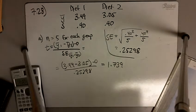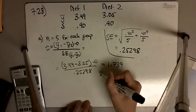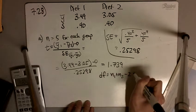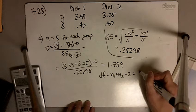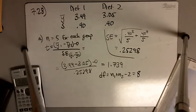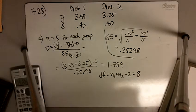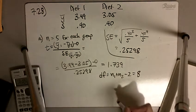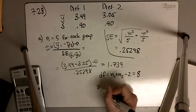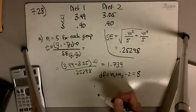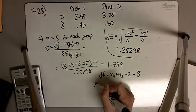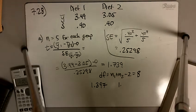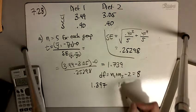And our degrees of freedom here is going to be n1 plus n2 minus 2. So that's going to be 5 plus 5 minus 2, or 8 degrees of freedom. So if we look up 1.739 and 8 degrees of freedom, that number falls in between 8 degrees of freedom, 1.397 and 1.860.